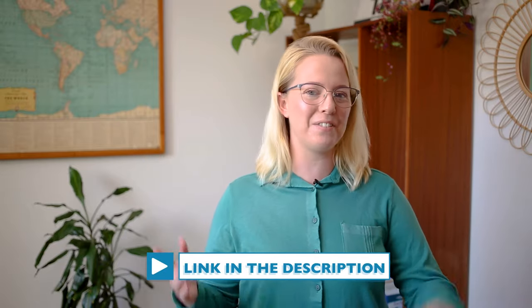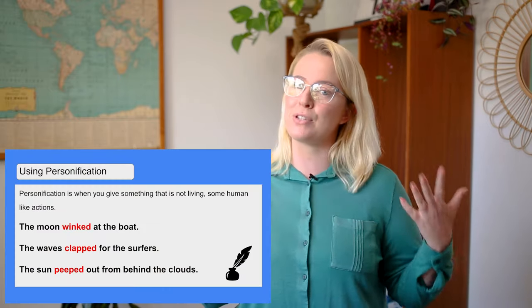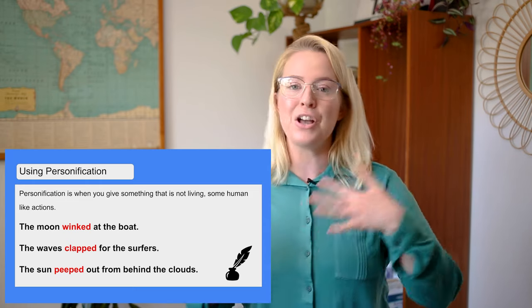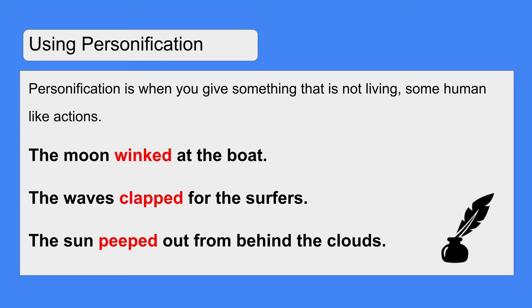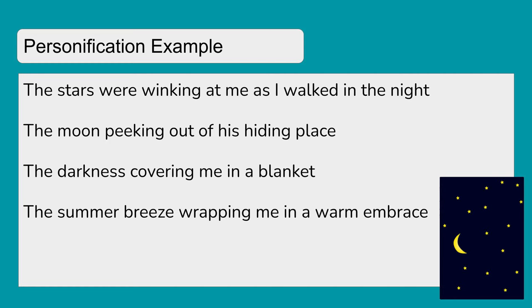The next thing that we can use is some personification. I've already got a video for you to have a look at if you want a quick reminder of what it is. When we use it in free verse poetry, personification is when you give something that's not human, human-like qualities or actions. Here are some examples: The moon winked at the boat. The waves clapped for the surfers. The sun peeped out from behind the clouds. Here is an example of how I used personification in my free verse poem: The stars were winking at me as I walked in the night. The moon peeking out of his hiding place. The darkness covering me in a blanket. The summer breeze wrapping me in a warm embrace. I was using personification to describe all the non-human things — I really liked the idea of the wind wrapping me in a warm embrace.